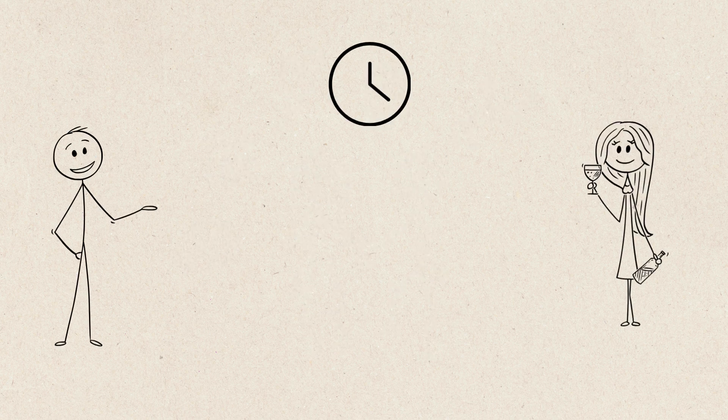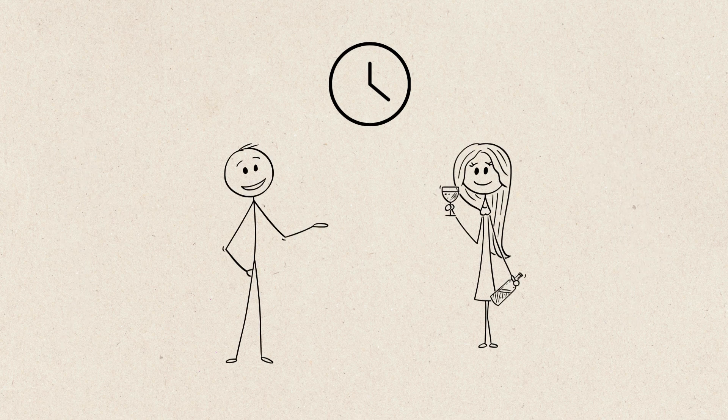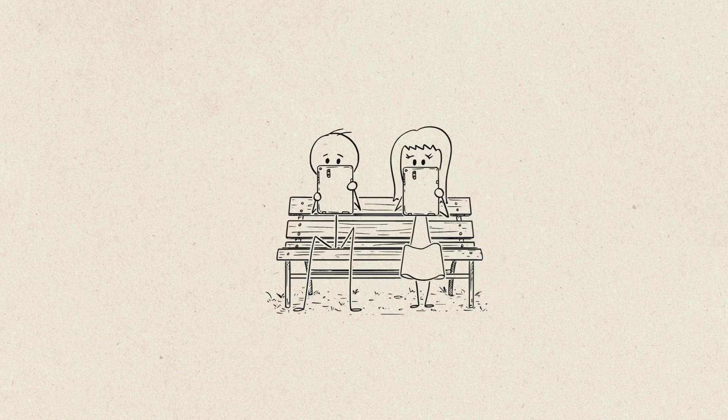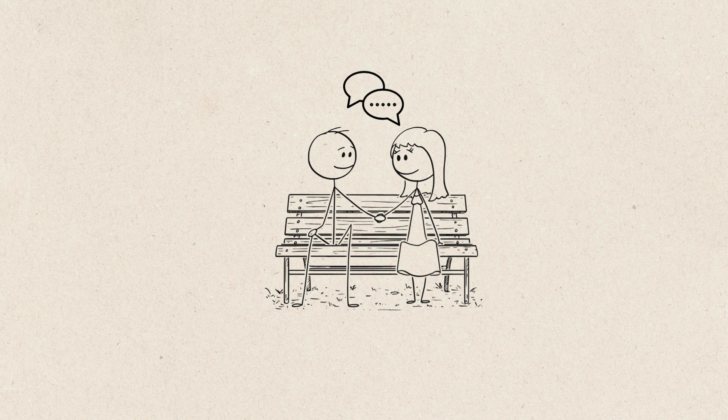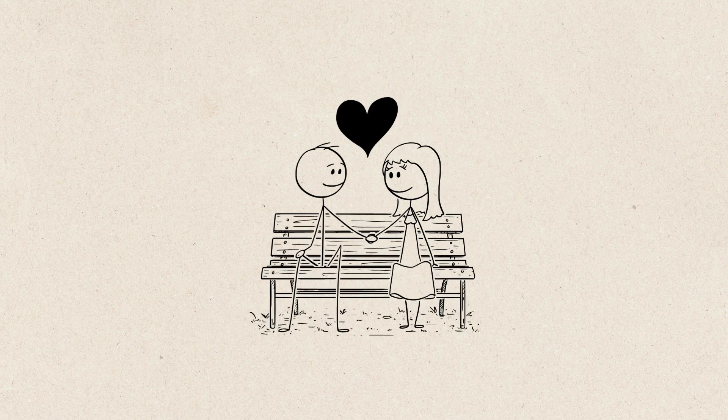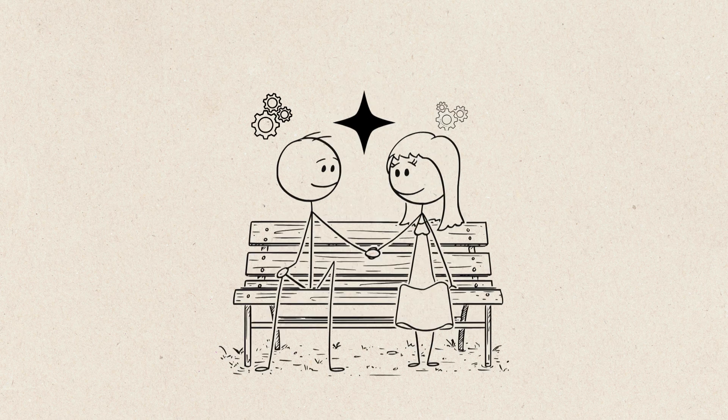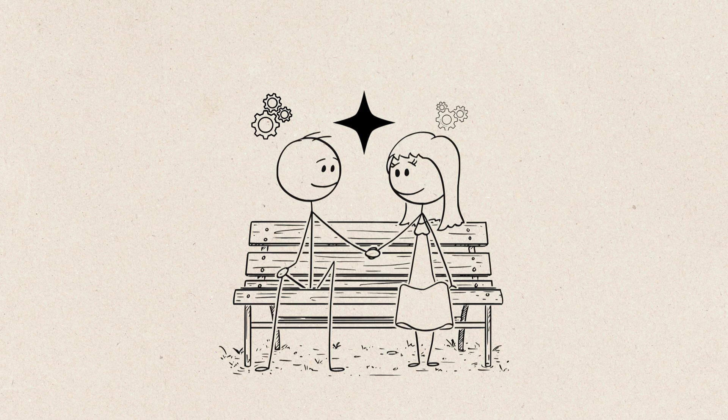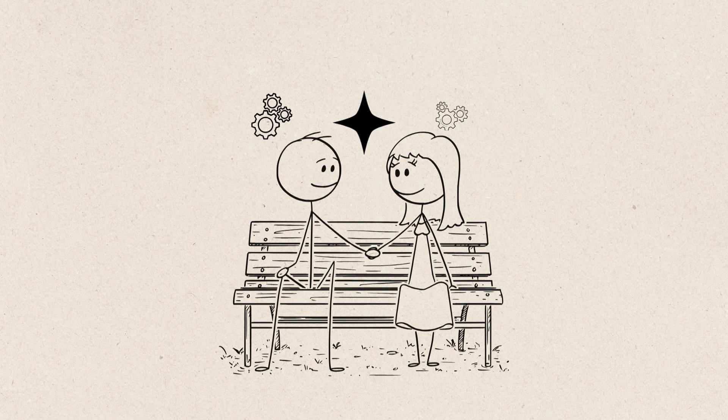And here's something even more fascinating. Attraction can grow over time. Studies show that even if someone doesn't seem attractive at first, prolonged interaction can change that. This is called the slow burn effect, proving that emotional connections can literally rewire your brain's perception of someone.